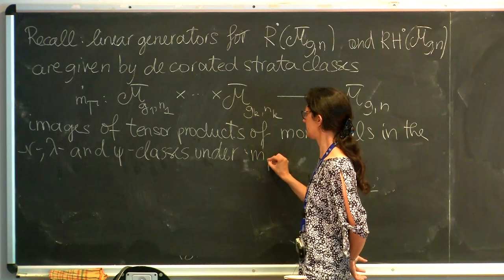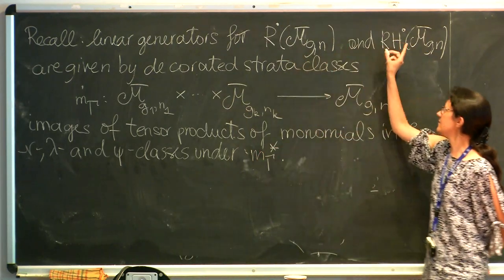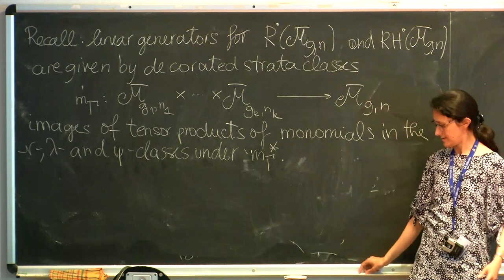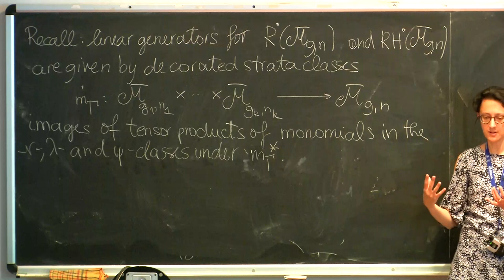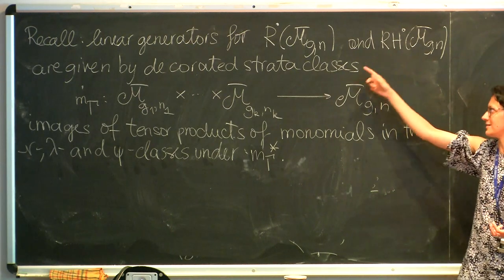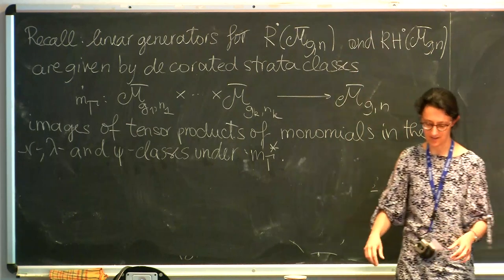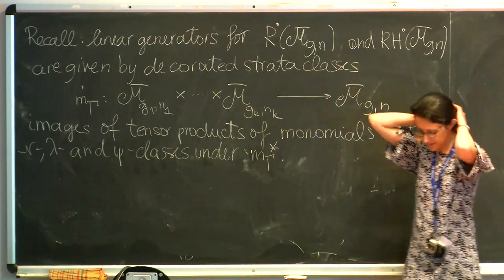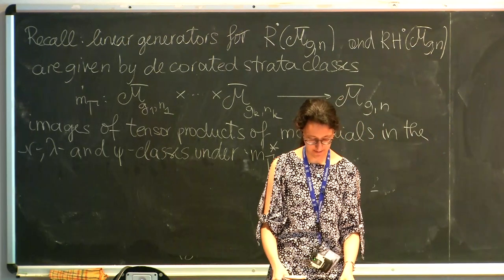Under the pushforward. It doesn't matter whether — in general, when we pass from the Chow groups to cohomology we lose a lot of information — but somehow in this case it does not matter. We can take the generators in both cases, we can take just the same. And that's one of the reasons why the map is well behaved.